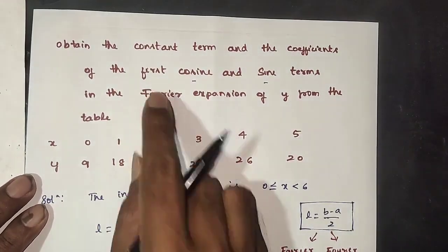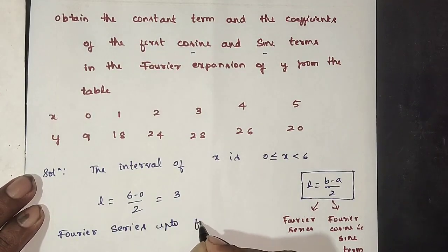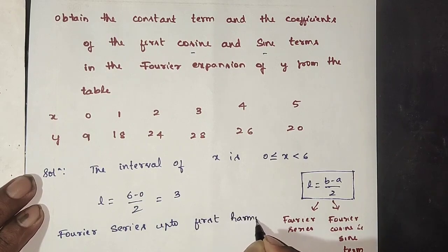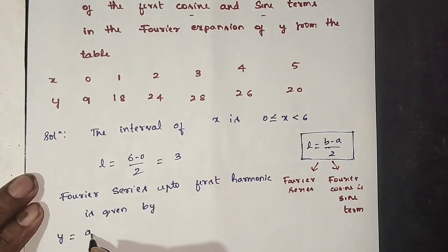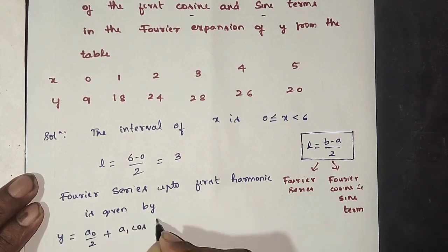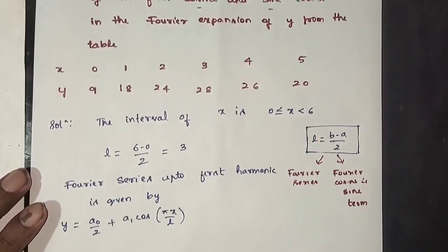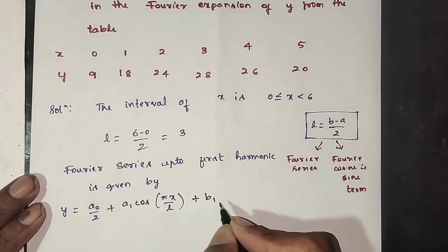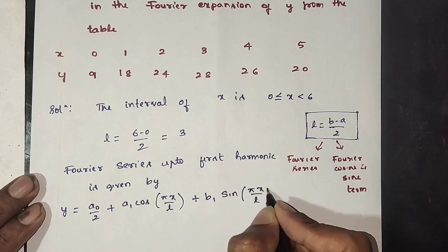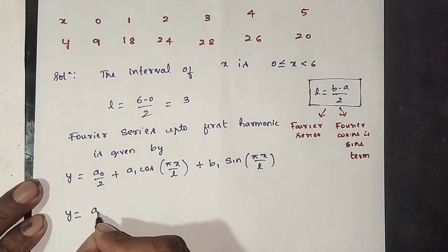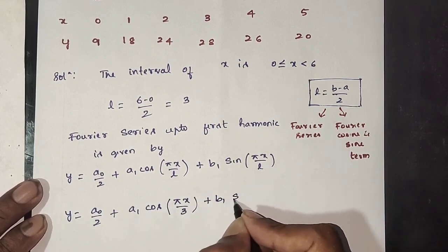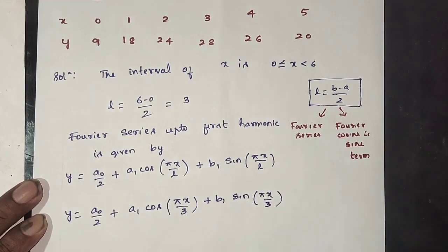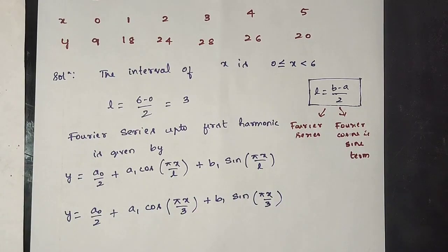First question: first harmonic. y is equal to a0 by 2 plus a1 cos(πx/l) plus b1 sin(πx/l). With l = 3, this becomes: y = a0/2 + a1 cos(πx/3) + b1 sin(πx/3). Now set up the table with columns: x, y, y·cos(πx/3), y·sin(πx/3).